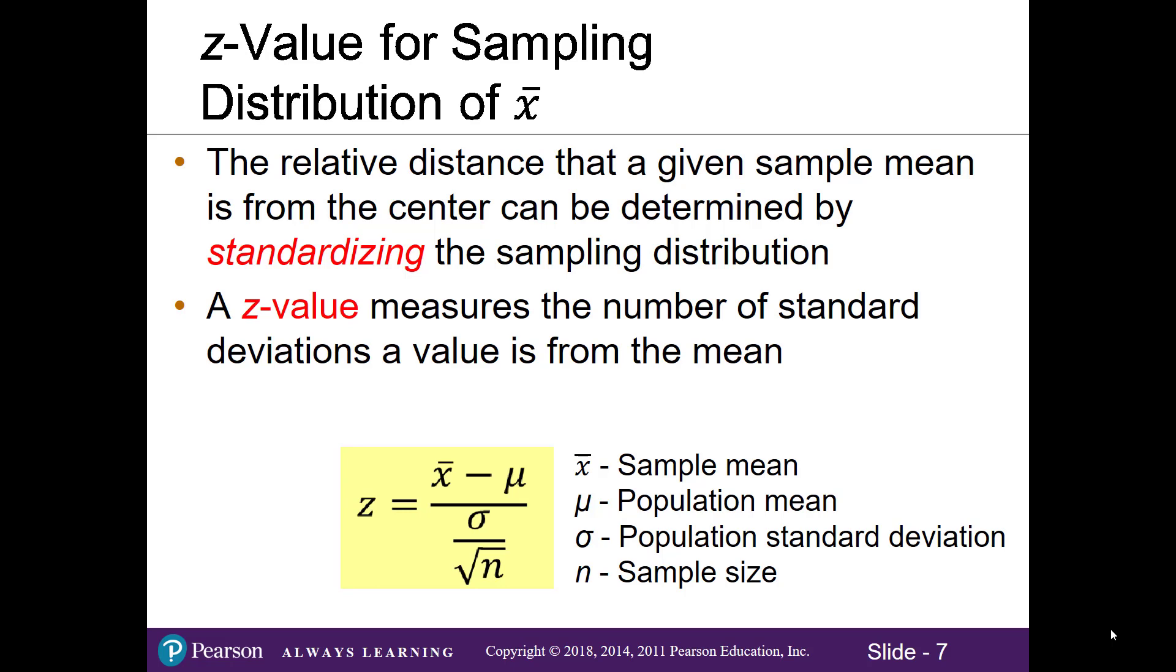In the last few chapters, we've been converting our x values into z values. Similarly, we can standardize our sampling distribution into z values. Recall, a z value simply measures the number of standard deviations a particular value is from the mean.